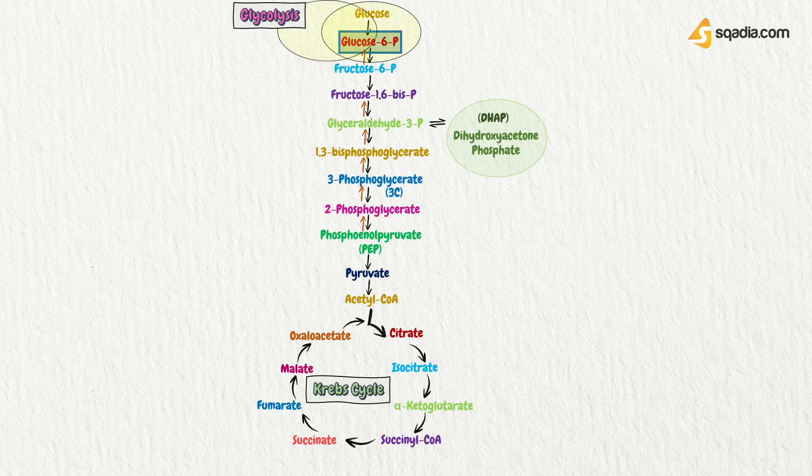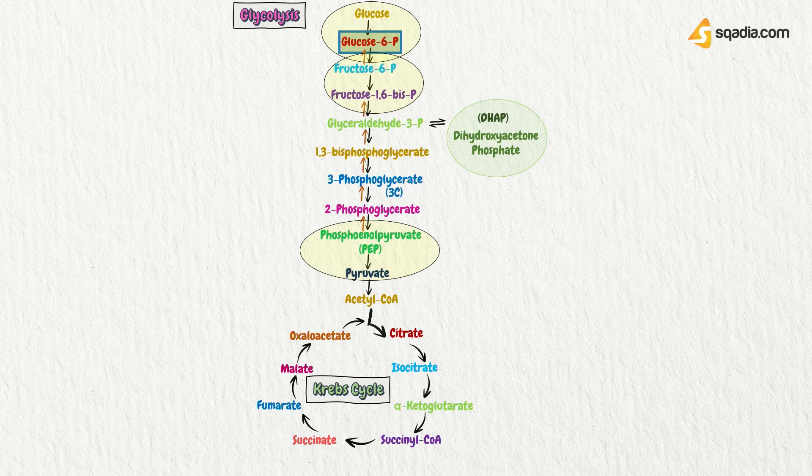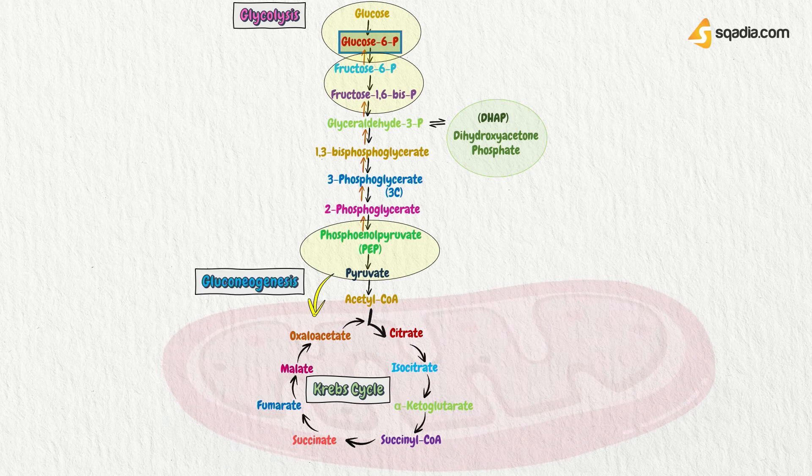Now, there are 3 steps in glycolysis that are irreversible. And we need pyruvate molecule to convert itself into glucose as well. So, for that, the pathway that it's going to follow is gluconeogenesis, in which the pyruvate molecule is converted back to glucose molecule.